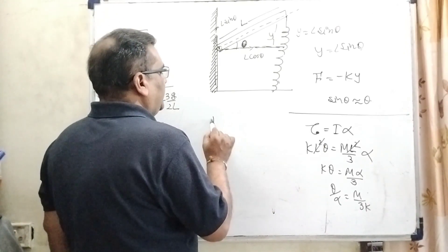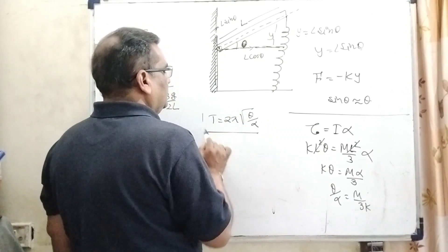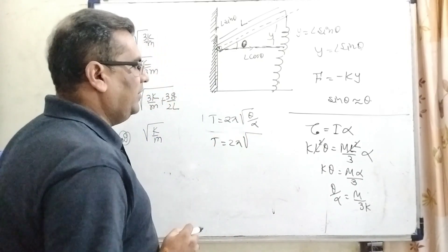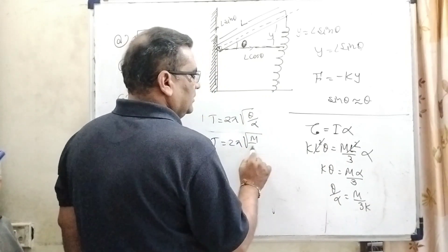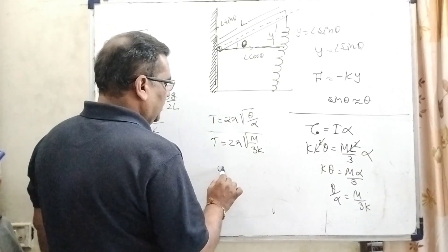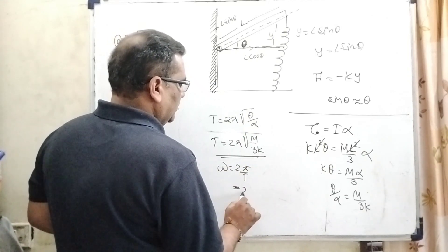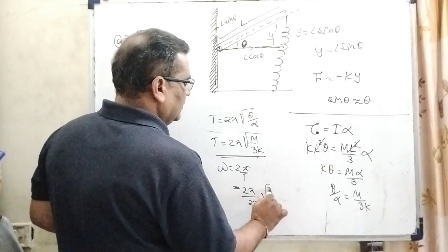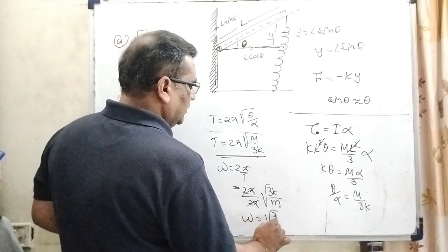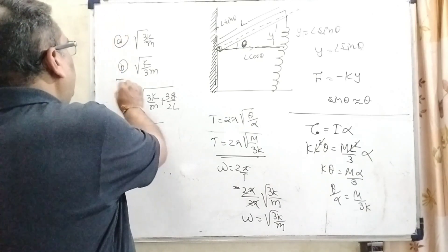Using the formula for time period T equals 2·pi·root(theta/alpha), and substituting theta/alpha equals M/(3k): T equals 2·pi·root(M/3k). Since we need angular frequency omega, and omega equals 2·pi/T, substituting gives omega equals root(3k/M). Checking the options, option A is the correct match.